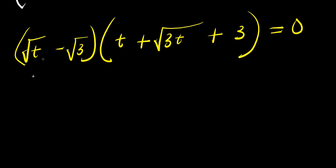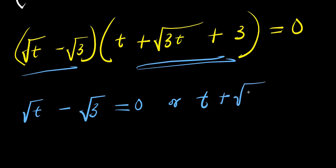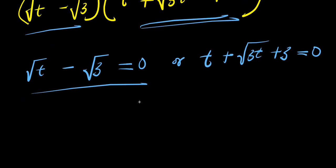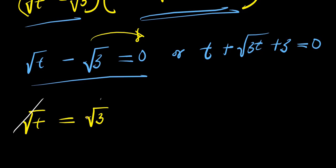The next step is to equate each factor to zero. We have root t minus root three equals zero, or t plus root three t plus three equals zero. For the first factor, moving root three to the other side: root t equals root three. Squaring both sides gives t equals three.